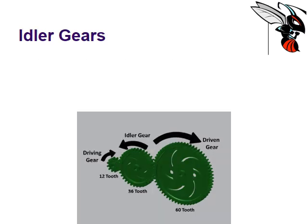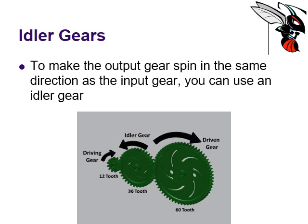Well, that's where idler gears come into play. Idlers are the ones that are in between. They make the output gear spin in the same direction as the input gear. So if the input gear is spinning in one direction and you want the driven gear to also spin in that same direction, then you need to have an idler gear. The idler gear kind of bridges that gap — you can use an idler gear to make everything spin in the same direction.